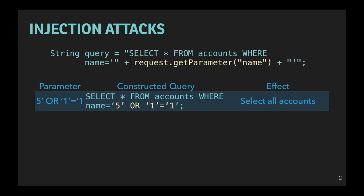In this example, an attacker could use apostrophes in their input, as shown, to break out of the quoting on the name parameter, allowing that attacker to execute arbitrary SQL expressions, in this case selecting all accounts from a table instead of just one.